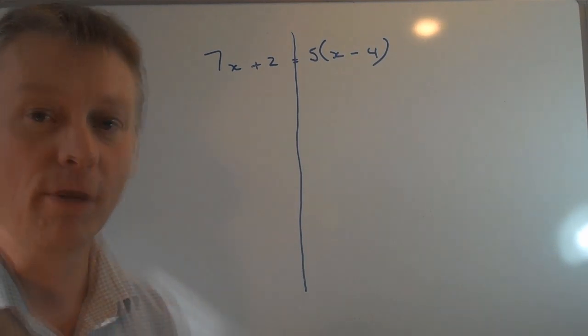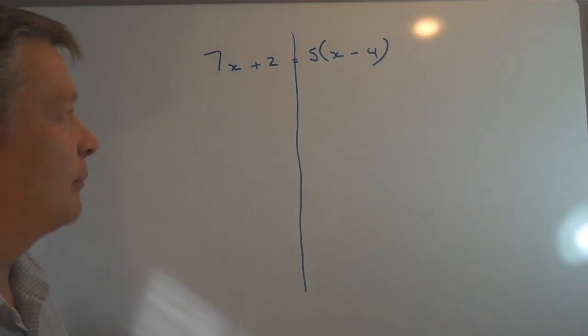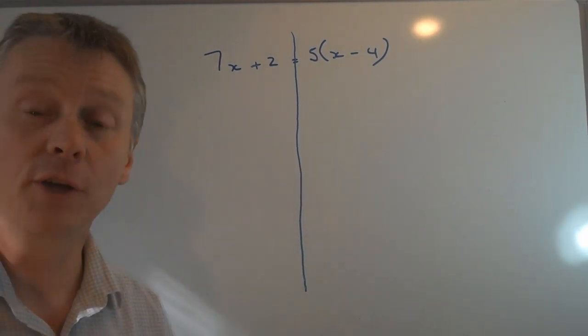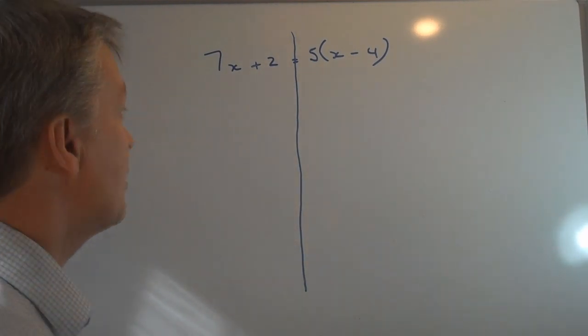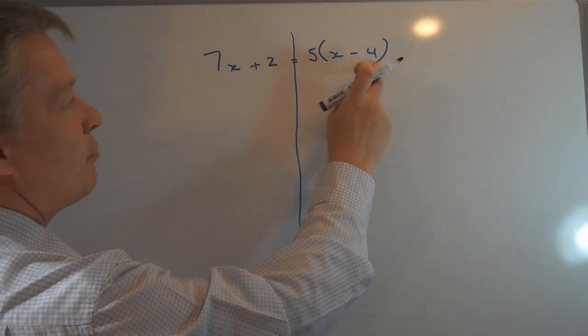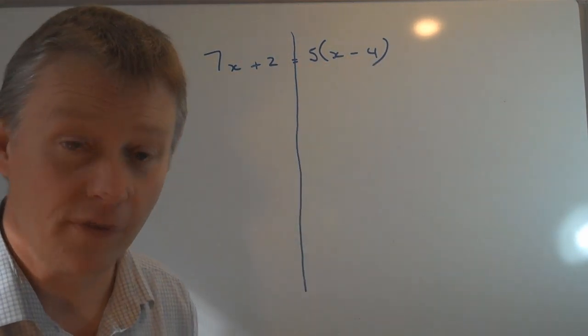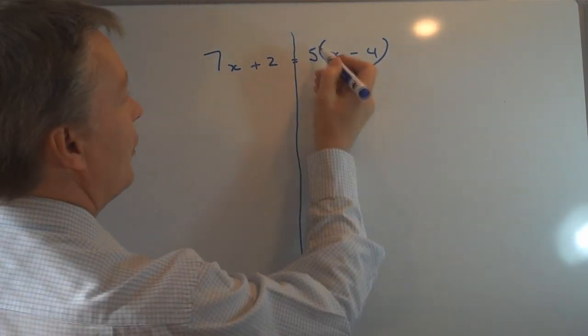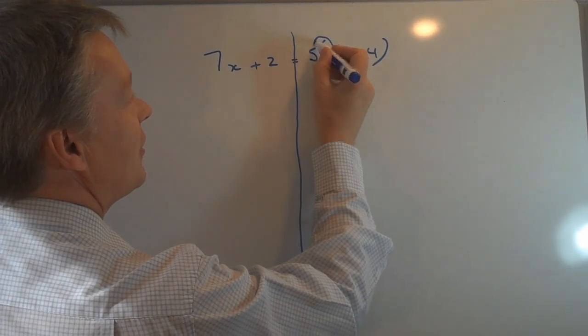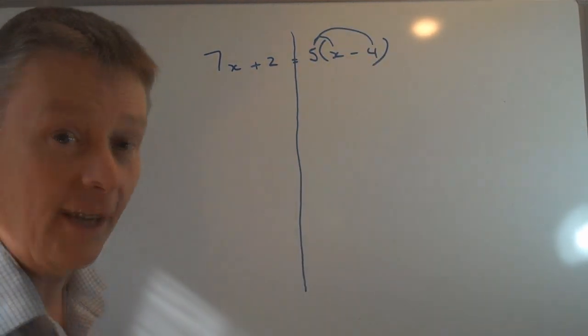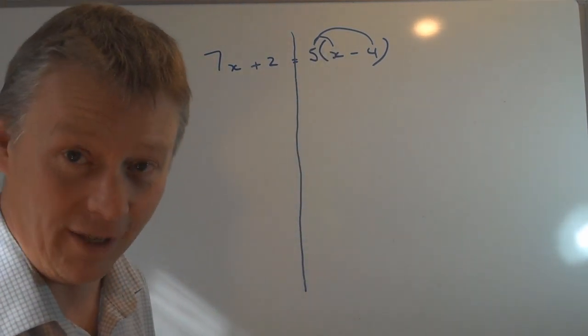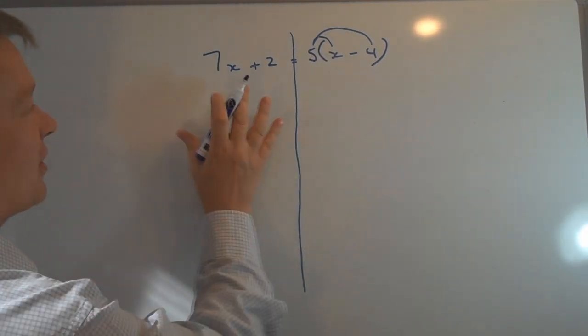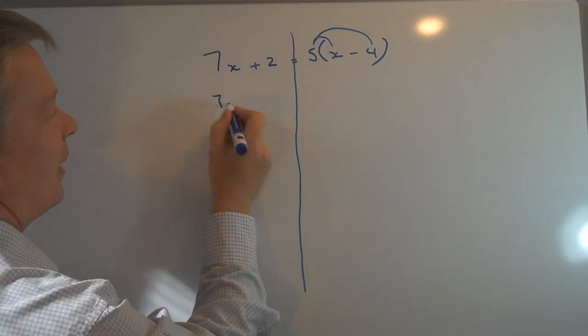It's really important in algebra to make sure that you balance both sides of the equation. So what I'm going to do first is get rid of these brackets, and if you look at the previous video that will show you that you need to multiply each of the terms inside the bracket by the term that's outside the bracket.